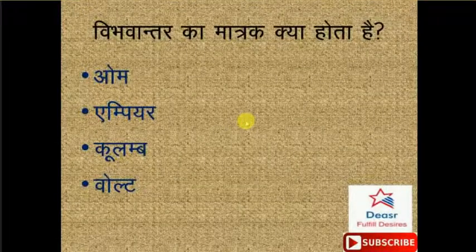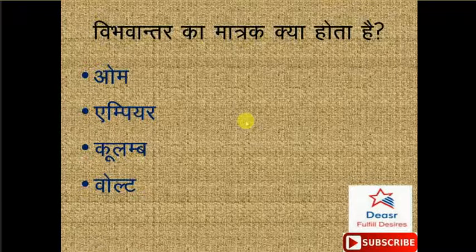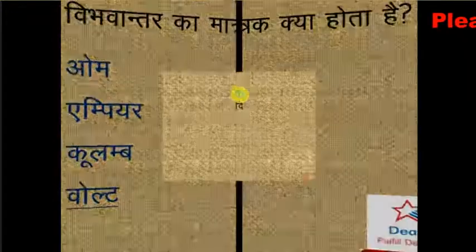Vibhavantar ka matrak kya hota hai? Options hain hamare paas: Ohm, Ampere, Coulomb, Volt. Iska sahih jawab hai, doston - Volt. Option number D yahan pe correct hai.